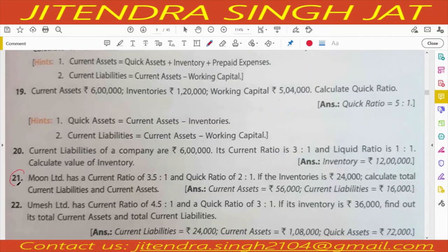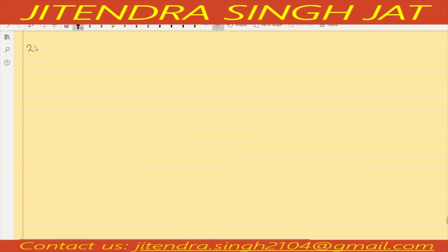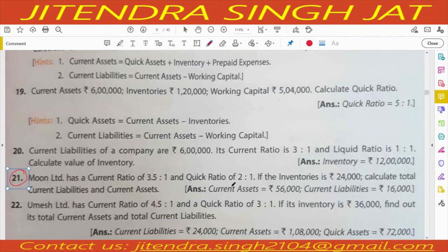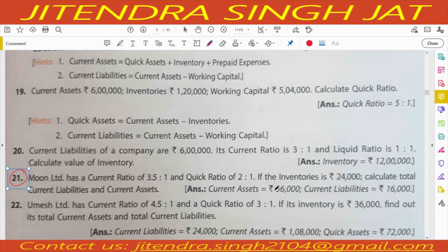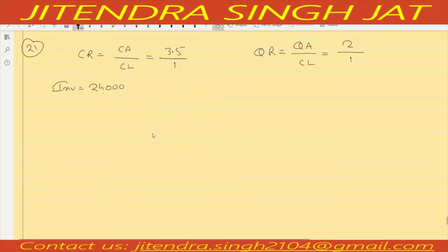Question number 21. Moon Limited has current ratio 3.5 is to 1, meaning current assets upon current liability equals 3.5 upon 1. Quick ratio is 2 is to 1, meaning quick assets upon current liability equals 2 upon 1. If the inventories are 24,000, calculate total current liabilities and current assets.